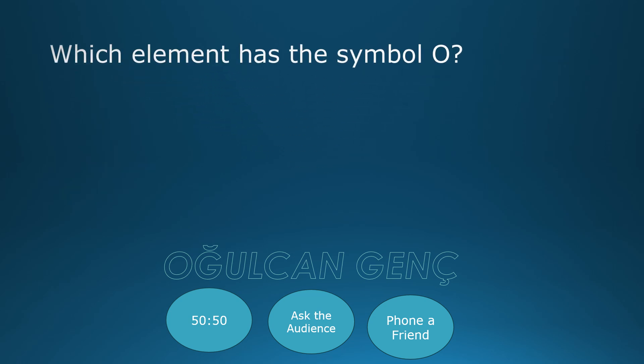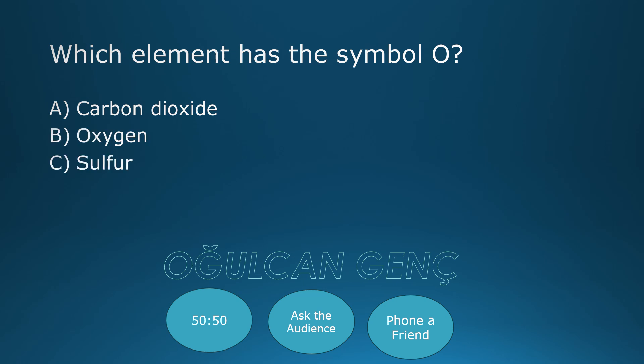Which element has the symbol O? Carbon dioxide, Oxygen, Sulfur, Carbon Monoxide. Correct answer: Oxygen, B.